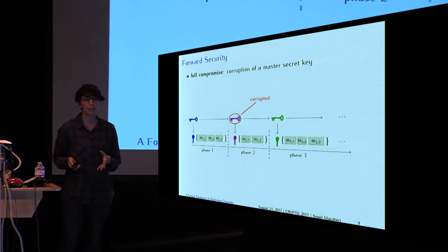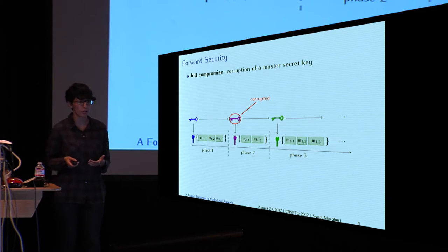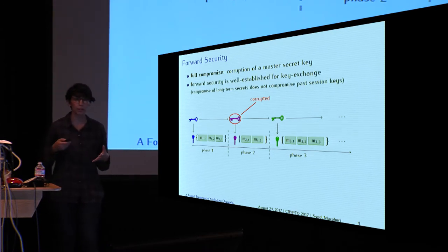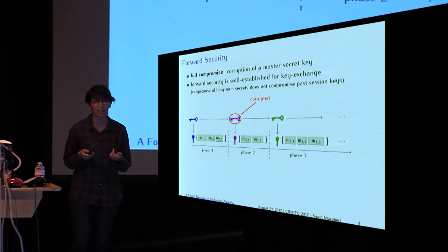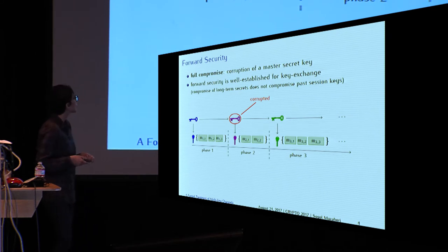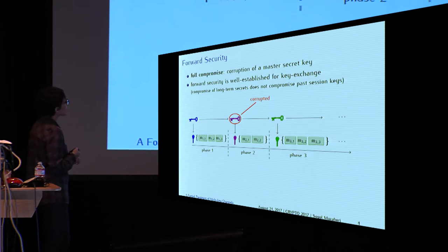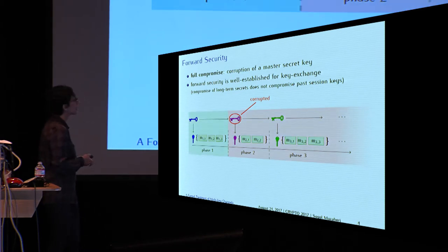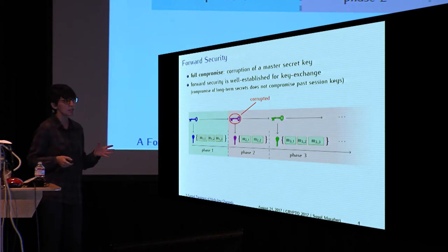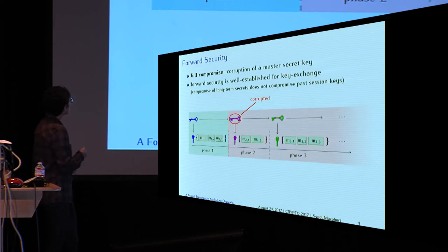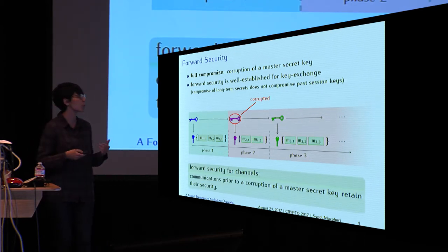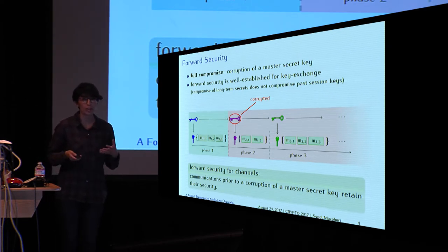The first of these security notions is forward security, concerned with the full compromise of the channel or the corruption of a master secret key — conceptually very close to forward security defined in key exchange protocols. If the adversary breaks into the computer and exfiltrates the master secret key of the current phase, say phase 2, then security from phase 2 onwards cannot be achieved because master secret keys there are derived from a corrupted one. However, if the keys are securely erased after their use, we should achieve security in the first phase. In general, forward security for channels means that communication prior to a corruption of a master secret key should retain its security.